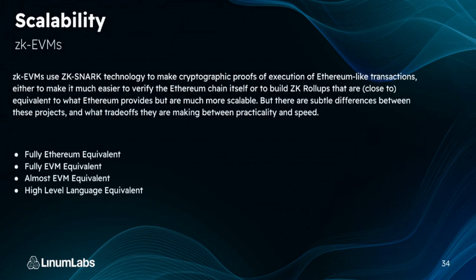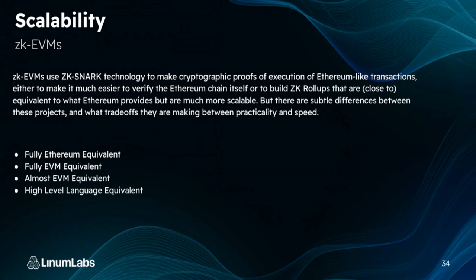Now let's look at ZK-EVMs. EVM stands for Ethereum virtual machine. Zero knowledge EVMs use ZK-SNARK technology to make cryptographic proofs of execution of Ethereum-like transactions — either to make it much easier to verify the Ethereum chain itself, or to build ZK rollups that are close to equivalent to what Ethereum provides but much more scalable. There are four types of ZK-EVMs: fully Ethereum equivalent, fully EVM equivalent, almost EVM equivalent, and high-level language equivalent.